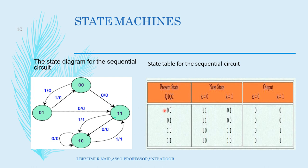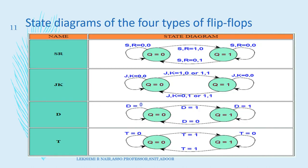So when we find out all the present states, all the next states, and all the outputs, the state table will be like this.